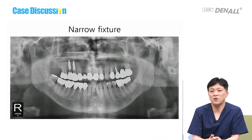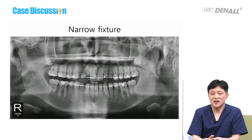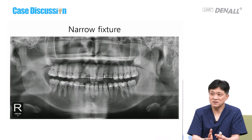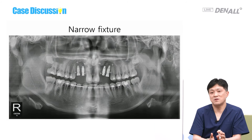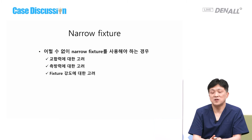After four months, the prosthesis was delivered and is being followed up. Using narrow fixtures, we need to consider the material's strength — fractures happen much more frequently with narrow fixtures. This is a congenital missing case with both buccal-lingual and mesiodistal width problems, requiring narrow fixtures. You can use a cantilever by reducing the number of fixtures, or use narrow fixtures, but you must think about bite force, lateral force, and material strength.